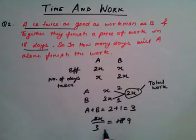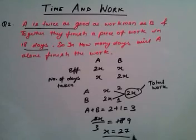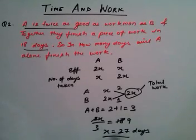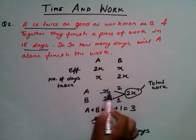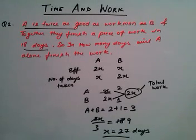Solving: 2X divided by 3 equals 18, so 2X equals 54, and X equals 27. So the value of X is 27 days, which is equal to the number of days taken by A alone. That is the final answer.